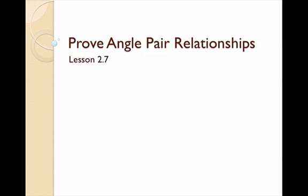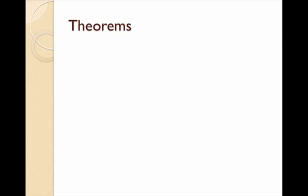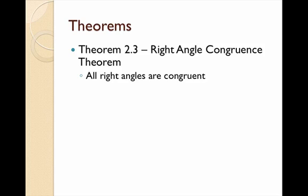Welcome to lesson 2.7. Today we're going to learn about how to prove different types of angle pair relationships. Today is going to be a lot of theorems and postulates. We'll go through a couple examples of proofs at the end of the lesson. So, some theorems. First, we already know that right angles are congruent to each other, but there's actually a theorem about it. Theorem 2.3 states that all right angles are congruent.